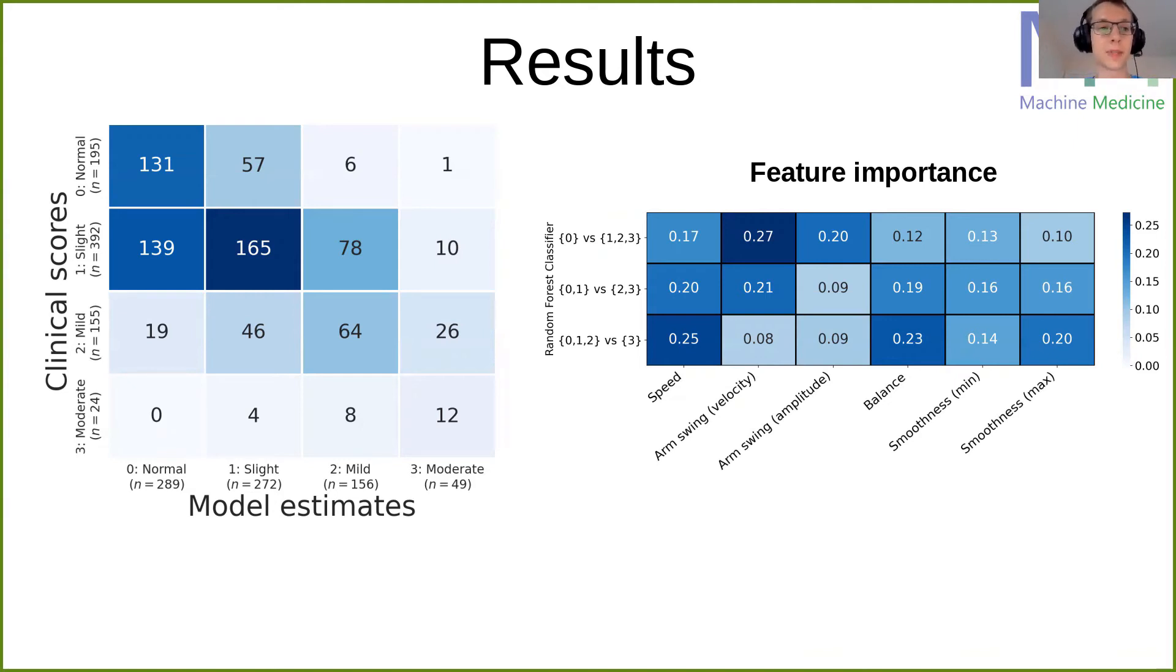And as I said, clinicians also often disagree with one another, so that's quite encouraging. We also saw a few interesting things such as arm swing being a feature that's very important early on in the disease. It is to distinguish between normal and maybe a very slightly impaired gait.